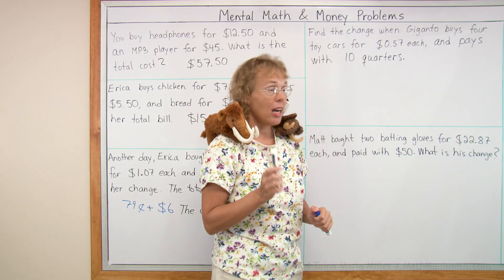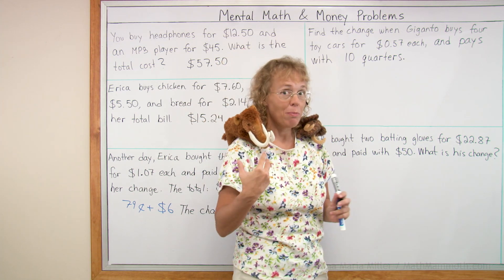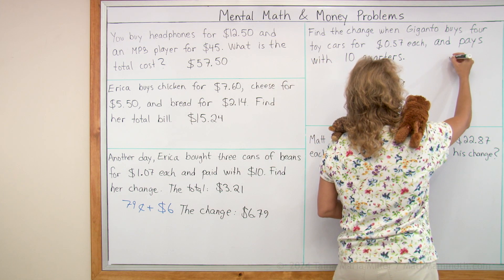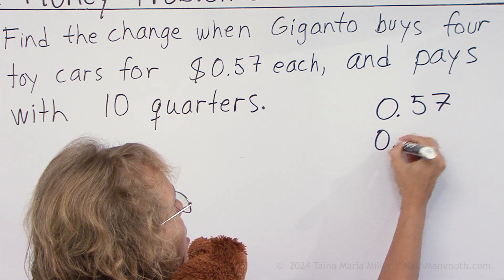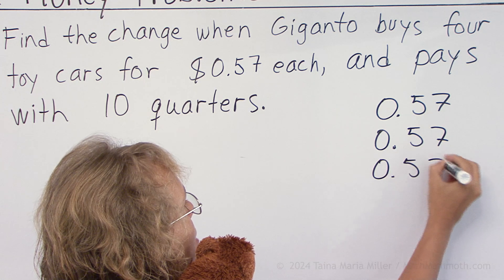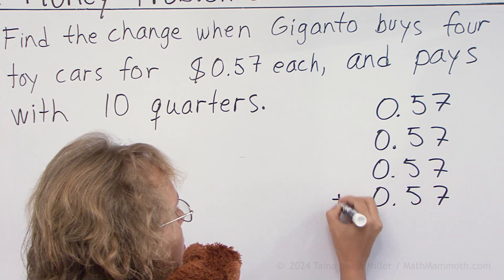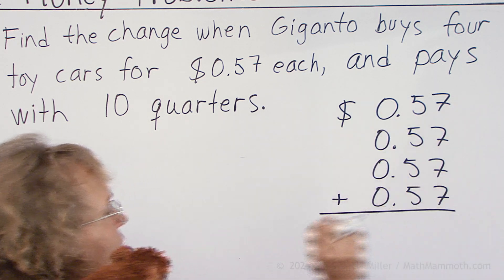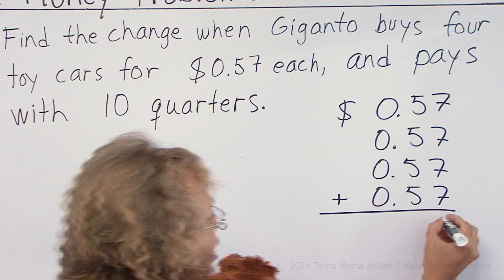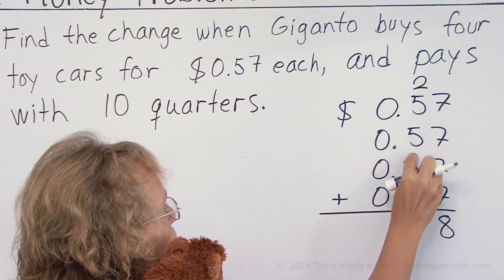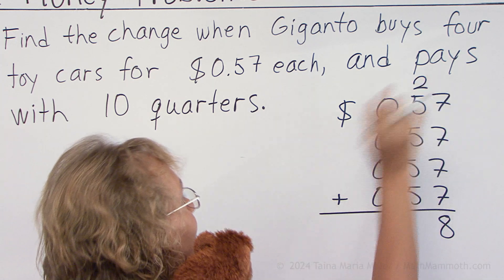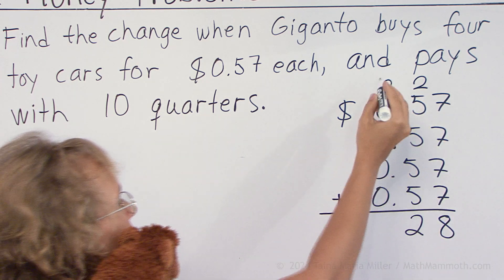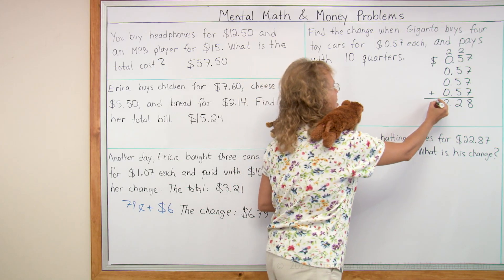I could do this with mental math, but I want to remind you how we add money amounts. So let's add the 57 cents here — it is zero dollars and 57 cents, and we have four cars, so we will add this four times. These are dollar amounts, so we have seven, seven, seven, seven. What's four times seven? 28. Then over here we have four times five, that's 20 and two — 22. And now you regroup or carry like that, and then we have two dollars. So the total is $2.28.